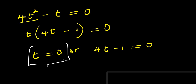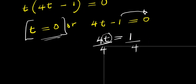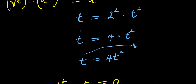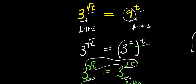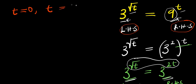The first solution t equals 0 is solved already. For 4t minus 1 equals 0, we move the negative 1 over: 4t equals 1. Dividing both sides by 4 gives t equals 1 over 4. So this equation gives us two solutions. The next step is to substitute both solutions back into the original equation to check if they satisfy it — that means confirming the left hand side equals the right hand side.